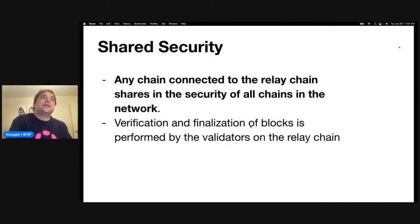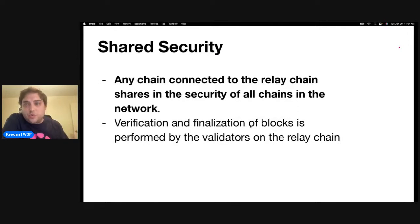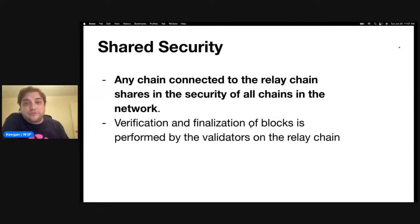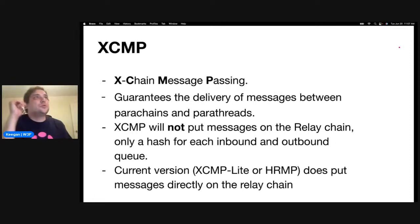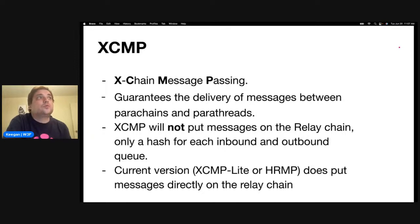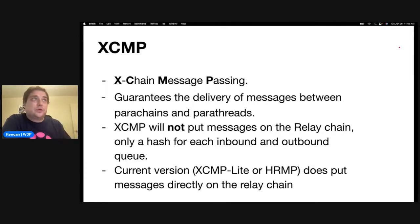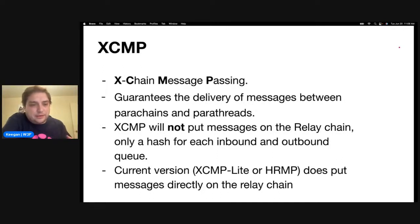Why would you want to be a parachain? Because any chain connected to the relay chain shares in the security of all chains in the network. You don't need a set of validators to run and finalize your blocks — the verification and finalization is performed by the validators for the relay chain. You also get the benefits of XCMP, known as cross-chain message passing, which allows you to trustlessly transfer arbitrary data on the runtime level through parachains and parathreads. It's a safer method than bridges through smart contracts because it operates at a lower level, closer to the system.